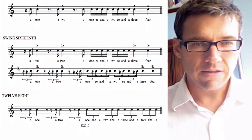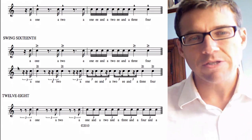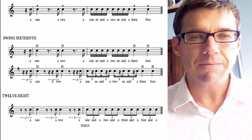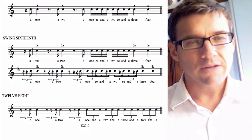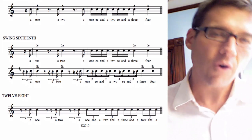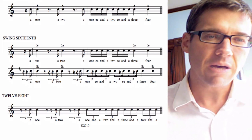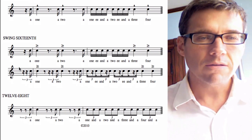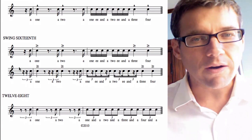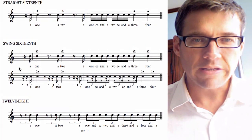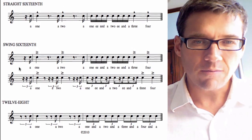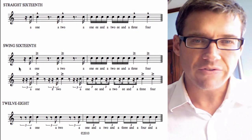Now here's swing sixteenths. The top example is how it's notated, the bottom would be how it sounds. Here's a slow tempo: 'A one, a two, a one and a two and a three, four.' You'll notice the difference between these two — instead of 'one and a two and a,' it's 'one and a two and a.' The swing breaks up those pairs of sixteenth notes.